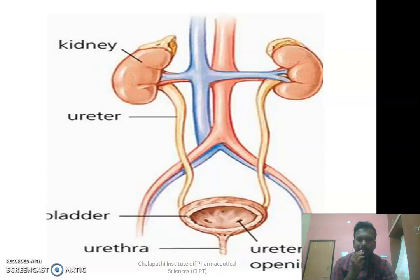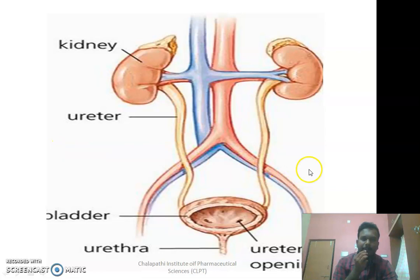We all know the urinary tract and the different parts of the urinary tract, which majorly includes kidneys, ureters, bladder, urethra, and urethral orifice. Kidneys and ureters are considered as the upper urinary tract, and bladder and urethra are considered as the lower urinary tract.